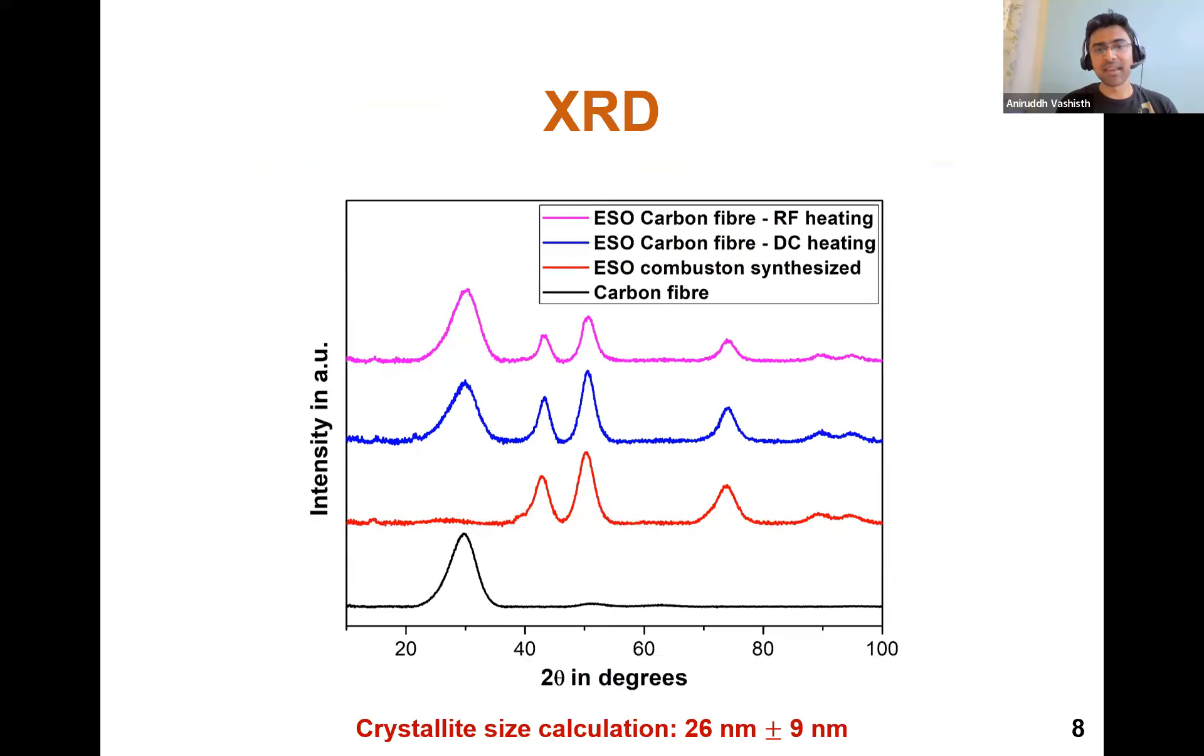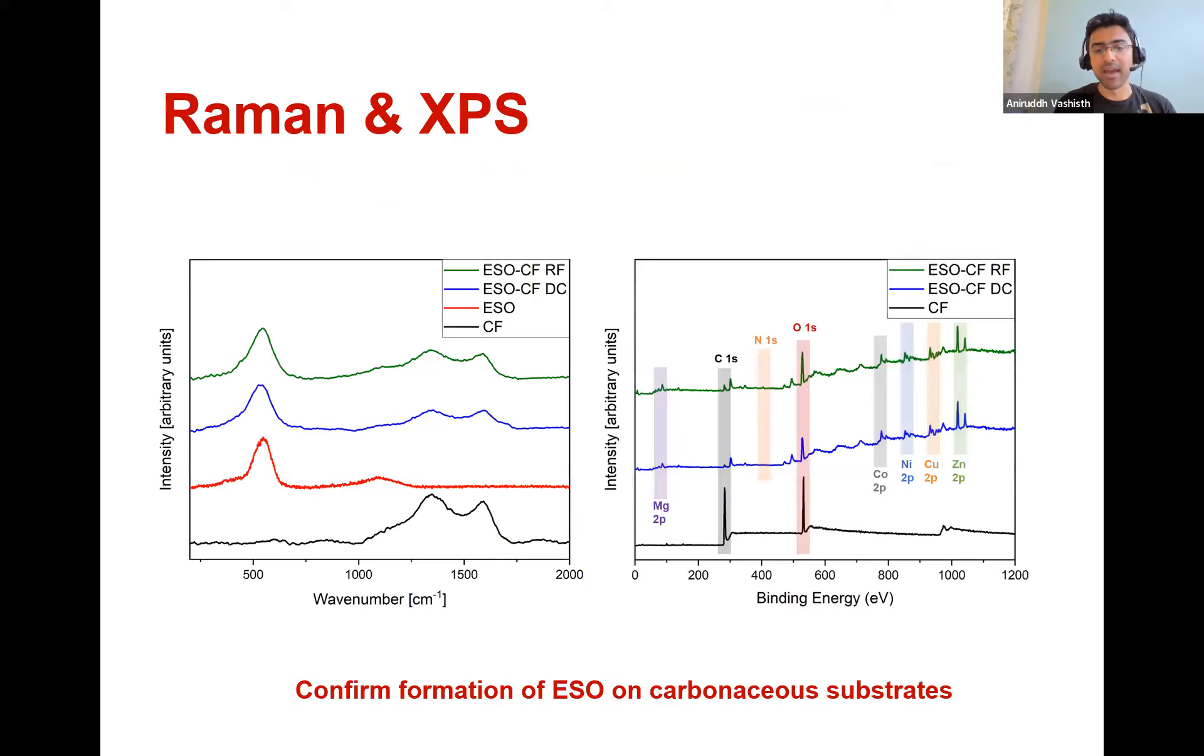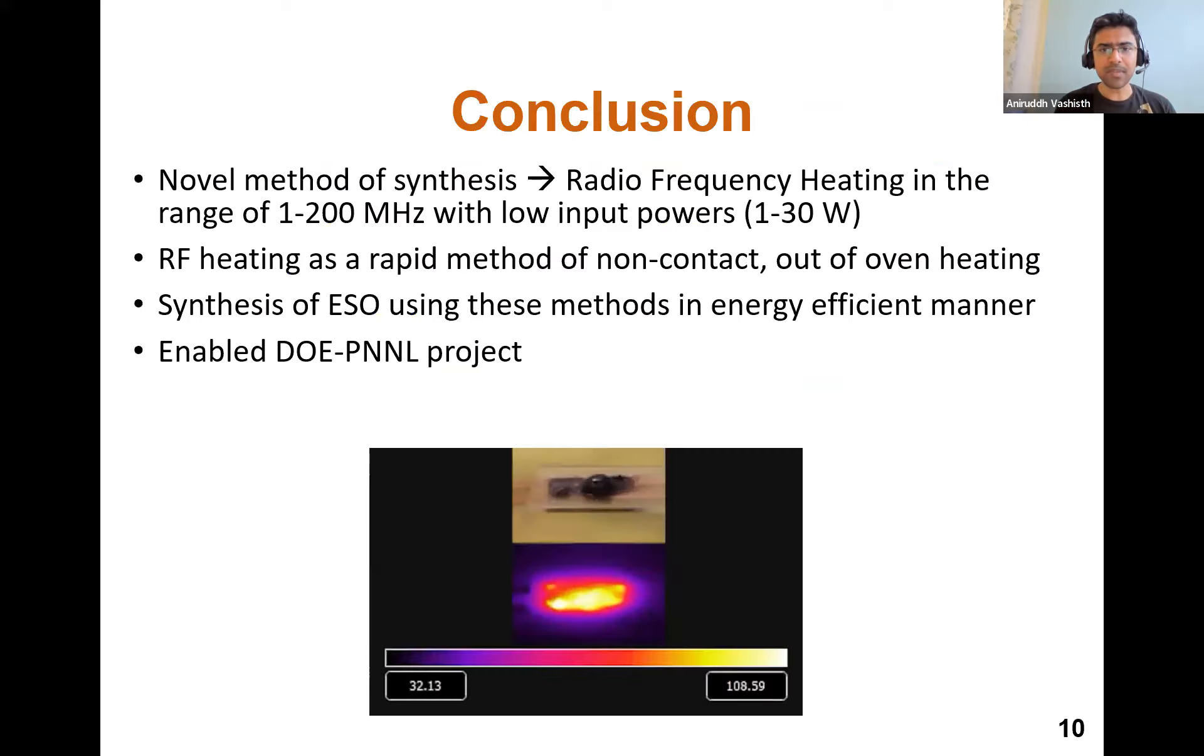We finally did some X-ray analysis, which included XRD to calculate the crystal size, and also Raman and XPS to determine how much material basically remained. And we saw really promising results there as well. So in conclusion, we synthesized ESOs with this novel method in a matter of minutes.